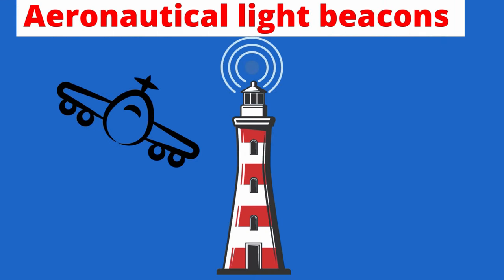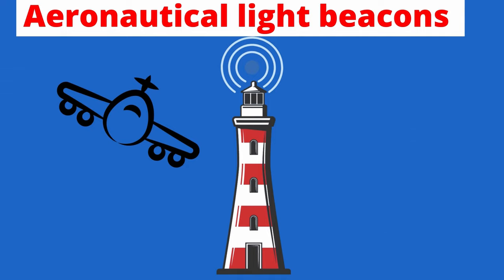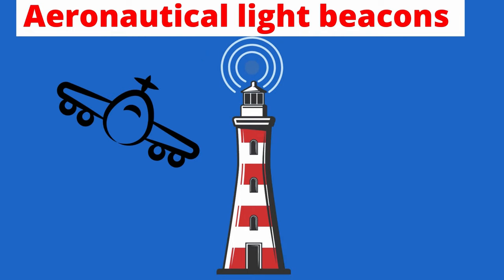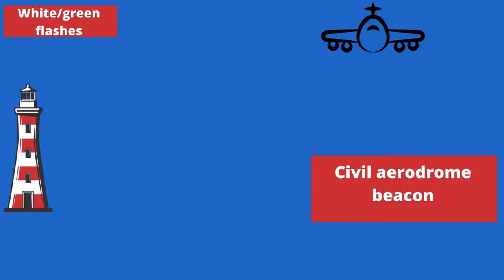Aeronautical light beacons are installed at various civil and military aerodromes in the UK. Their hours of operation vary, but broadly speaking they can be expected to be on at night and by day in bad visibility, whenever the aerodrome is operating. Aeronautical light beacons include identification beacons, which flash a two-letter Morse group every 12 seconds — green at civil aerodromes and red at military aerodromes. Aerodrome beacons give an alternative colour flash signal instead, usually white/white or less commonly white/green. They are not normally provided in addition to an identification beacon.